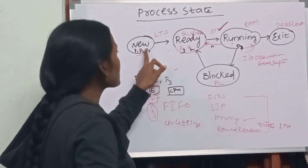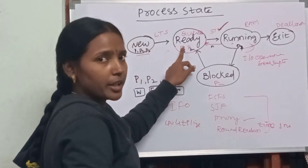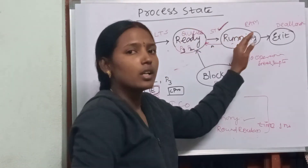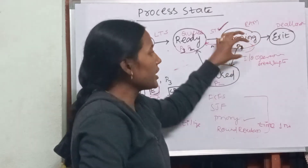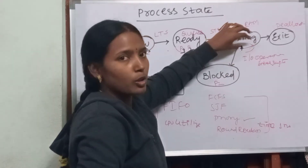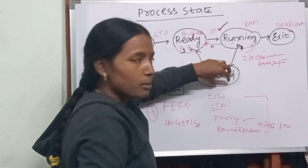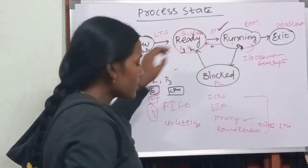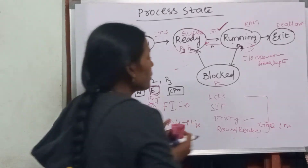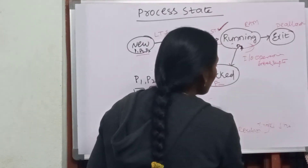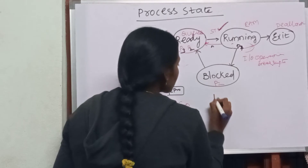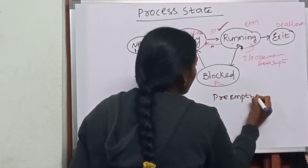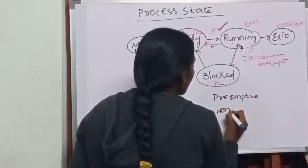To summarize so far: the long-term scheduler moves processes from the new state to the ready queue, and the short-term scheduler moves processes from the ready queue to the running state. If any I/O interrupt occurs, the process moves from the running state to the blocked state, and from blocked state back to the ready state. Two important concepts here are preemptive and non-preemptive scheduling.